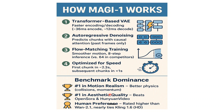Looking at the benchmarks, Magi1 ranks number one in motion realism, number one in aesthetic quality, and scores higher than Wan 2.1 in human preference, nearly tying with Cling 1.6. That's a brief overview of the new model. You can play around with it for free — 500 credits are given. Check the link in the description below. I hope you love Magi1!